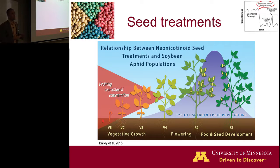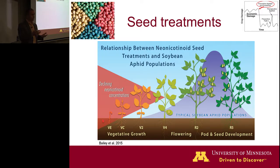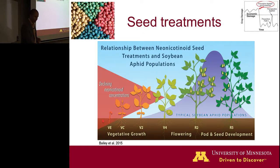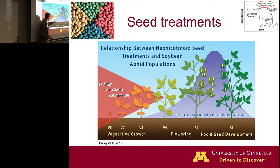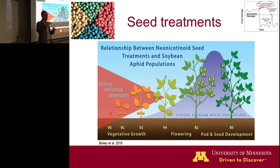Another preventative management tactic is the use of seed treatments — coatings on soybean seed, often a neonicotinoid insecticide that is taken up by the plants and can effectively protect plants for a fairly limited period after emergence. However, the challenge is that over time the concentration of the insecticide in the plants decreases, and this doesn't always overlap well with the colonization timing of soybean aphids.